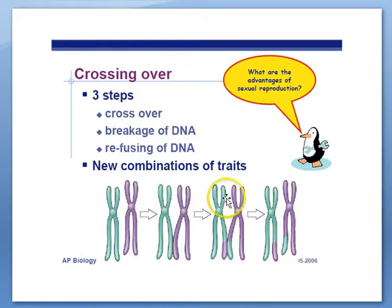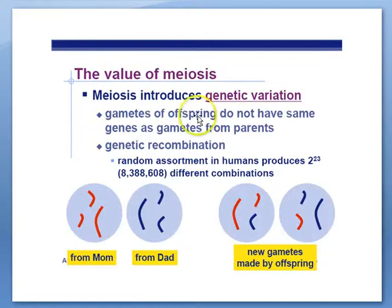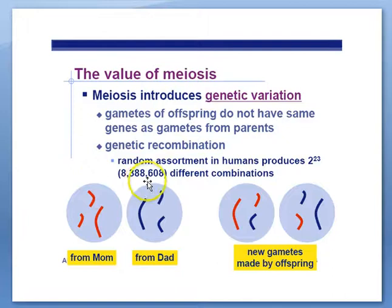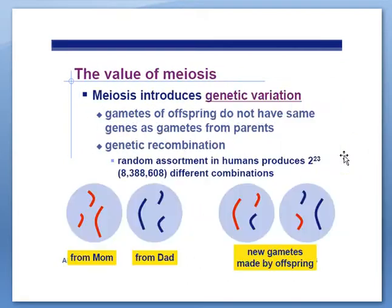We have a crossing over event, then breakage of the DNA, and then rejoining the DNA to recombine chromosomes. Meiosis introduces a lot of genetic variation to the cells. Each human with 23 chromosomes can produce 2 to the 23rd power of different combinations of sex cells — about 8 million different possibilities for each sex cell. Crossing over adds even more variation, and the value of meiosis is to introduce genetic variation.